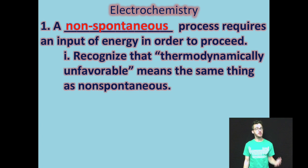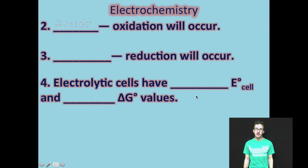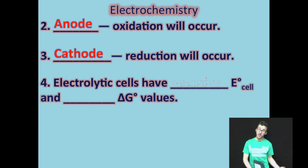A couple things to remember here: a non-spontaneous process requires an input of energy in order to proceed, and recognize that the College Board is really looking for thermodynamically unfavorable when we're talking about something that's non-spontaneous. In an electrolytic cell, recognize that our anode is still going to be the location where oxidation will occur. The cathode is still going to be the location where reduction will occur.